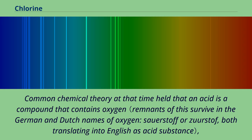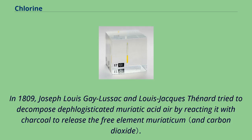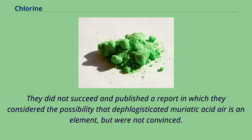Common chemical theory at that time held that an acid is a compound that contains oxygen. So a number of chemists, including Claude Berthollet, suggested that Scheele's dephlogisticated muriatic acid air must be a combination of oxygen and the yet undiscovered element muriaticum. In 1809, Joseph Louis Gay-Lussac and Louis-Jacques Thénard tried to decompose dephlogisticated muriatic acid air by reacting it with charcoal to release the free element muriaticum. They did not succeed and published a report in which they considered the possibility that it is an element, but were not convinced.